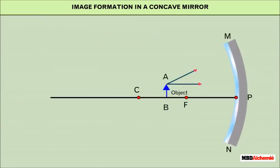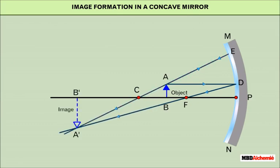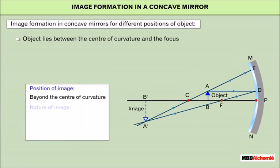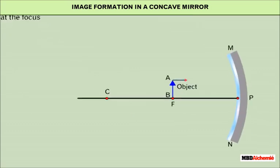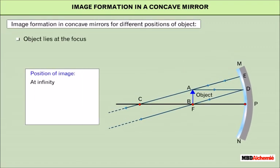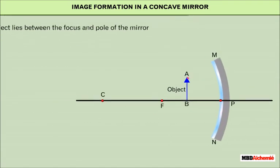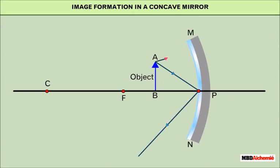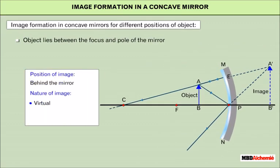When the object lies between the center of curvature and the focus, the image is formed beyond the center of curvature, which is real, inverted, and magnified. When the object lies at the focus, the image is formed at infinity, which is real, inverted, and highly magnified. When the object lies between the focus and the pole of the mirror, a virtual, magnified, and erect image of the object is obtained behind the mirror.